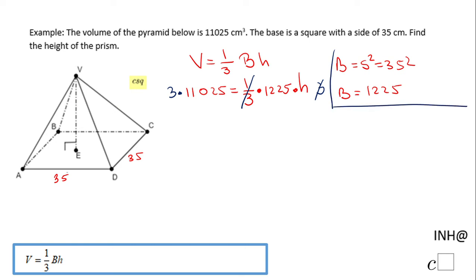And we have 3 times 11,025 that will be 33,075 equals 1225 times h. So the last thing we need to do is divide by 1225 and we get the height and that is 27. So the height of this square pyramid that has a volume of 11,025 is 27 centimeters.